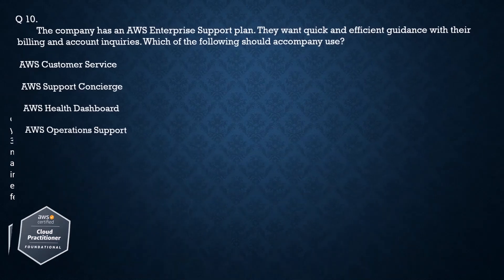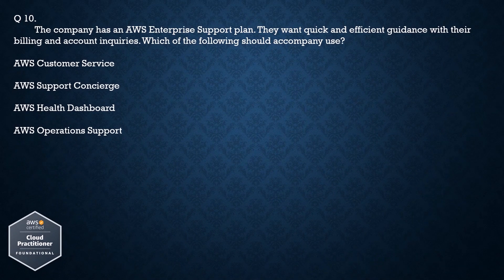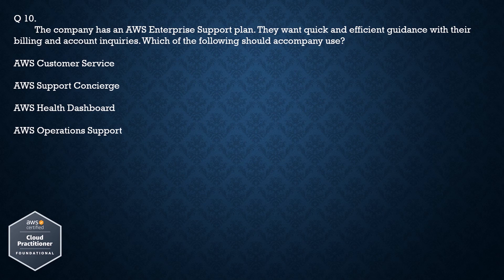Question number 10: The company has an AWS Enterprise Support Plan. They want quick and efficient guidance with their billing and account inquiries. Which of the following should a company use? Options: AWS Customer Service, AWS Support Concierge, AWS Health Dashboard, AWS Operations Support.